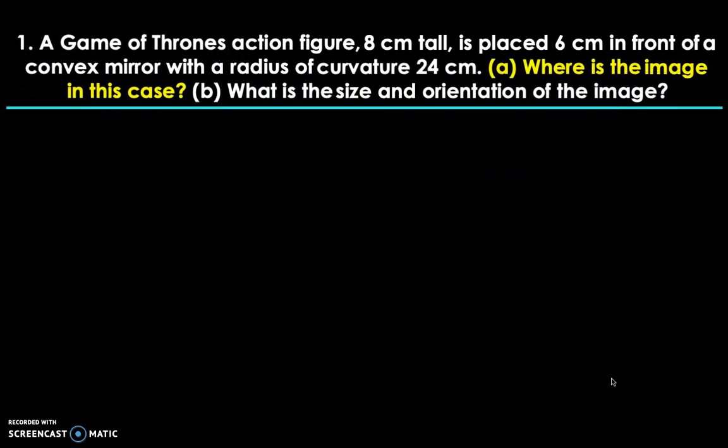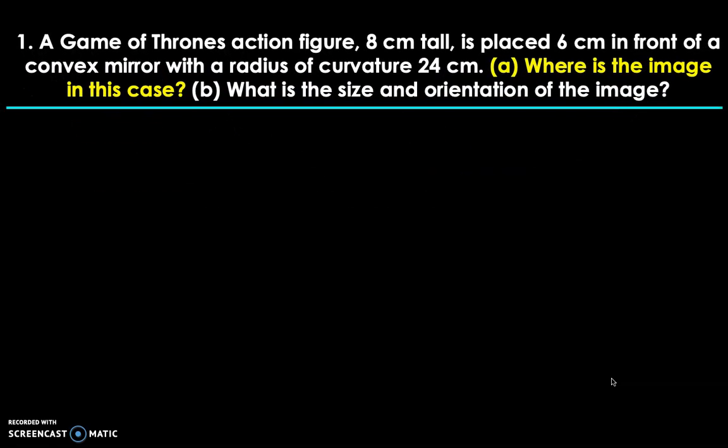So the first thing we're going to solve for is letter A: Where is the image in this case? Let's start by writing down the given. For the object height, we have 8 centimeters, object distance is 6 centimeters away from the mirror, and the radius of curvature is 24 centimeters.